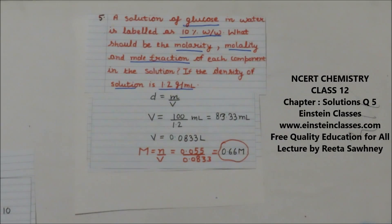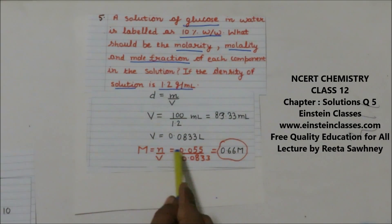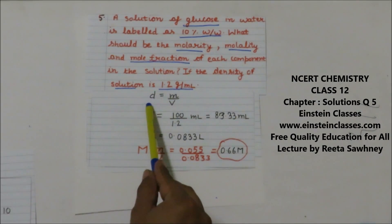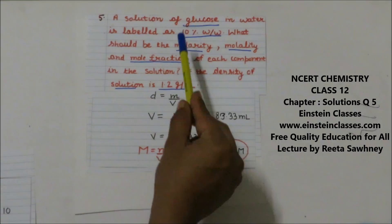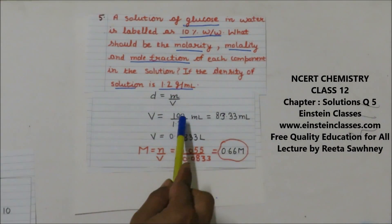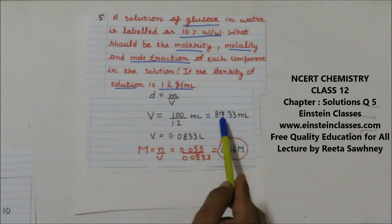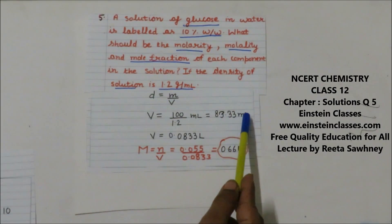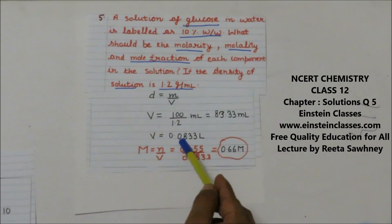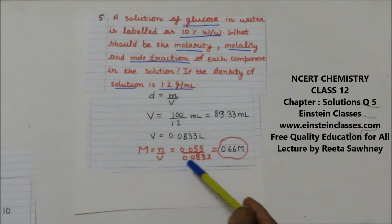Now we find the molarity of the solution. Molarity = moles of solute divided by volume of solution in liters. Moles of glucose = 0.055. Using density = mass/volume, mass of solution is 100 gram and density is 1.2 gram per mL, so volume = 100/1.2 = 83.33 mL = 0.0833 liter. Therefore molarity = 0.055 / 0.0833.